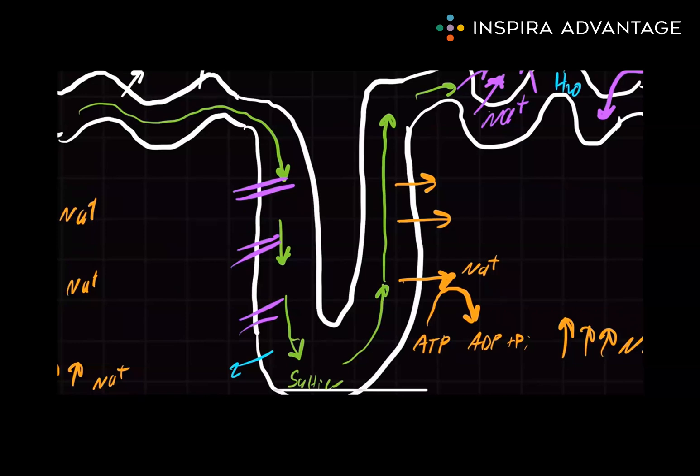If we add more aquaporins into the descending loop of Henle, this is going to allow more water to flow from inside the loop of Henle to outside the loop of Henle. And what's outside? The blood. So this is reabsorption. What's going on is ADH is increasing the reabsorption of water.